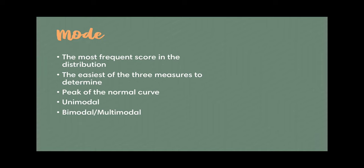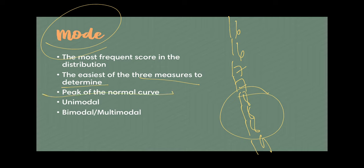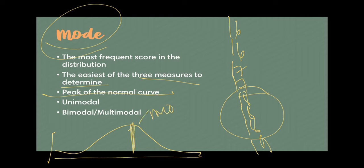Finally, we have the mode. The mode is basically the most frequent score in the distribution — the one with the highest frequency and percentage. So if you have sixteen, sixteen, seventeen, seventeen, eighteen, eighteen, eighteen, nineteen, the mode is eighteen. It's the easiest among the three measures to determine because you're basically just counting how many times each value comes up. It's usually the peak of the normal curve — when you arrange your values and plot frequency, the peak is where you find your mode.